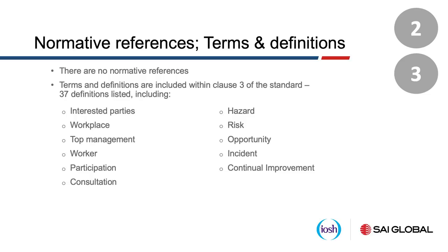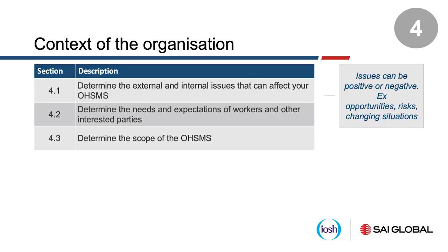In terms of opportunities, what you're looking at is something that enables the occupational health and safety system. Let's move on to the context of the organization now. These are the three crucial new clauses of the standard. The first: we are required to determine the external and internal issues. The second clause is to determine the needs and expectations of workers and other interested parties — a very important component. And thirdly, the scope of the management system. We will focus on clauses 4.1 and 4.2 in greater detail.